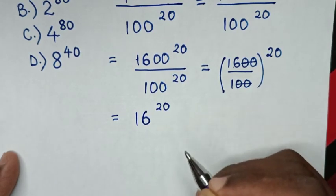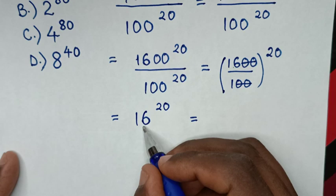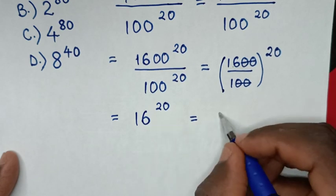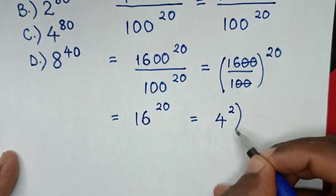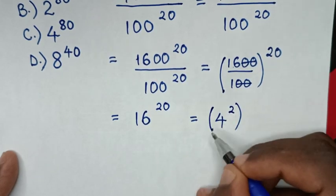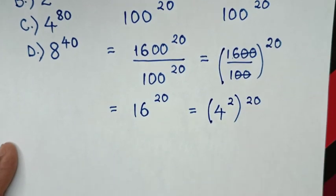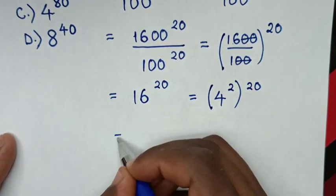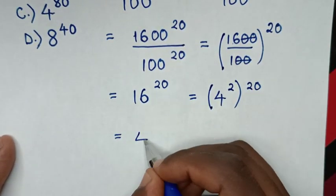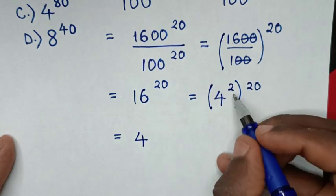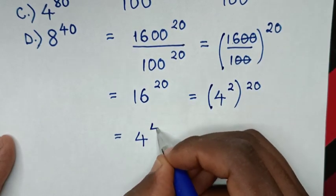Then, in the next step, it will be equal to: 16 is the same as 4 power of 2, then in brackets, power of 20. So it becomes 4 power of 2, power of 20, which equals 4 times power of 20, giving power of 40.